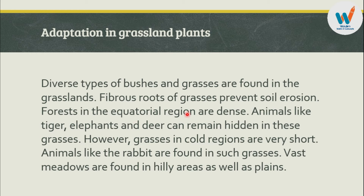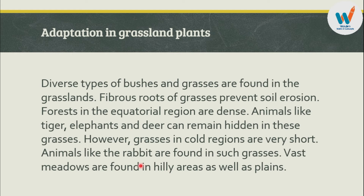If we see this equatorial region, it is called Vishuvrutiya Pradesh. In the Vishuvrutiya Pradesh we see the dense jungle. Animals like tigers, elephants and deer can remain hidden in these grasses. However, grasses in the cold regions are very short, and animals like the rabbit are found in such grasses. The vast meadows are found in hilly areas as well as plains.